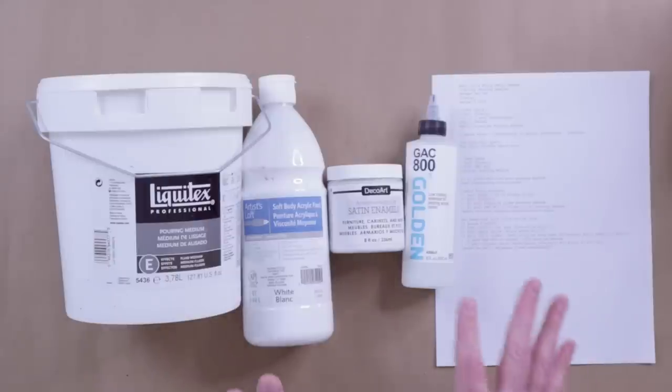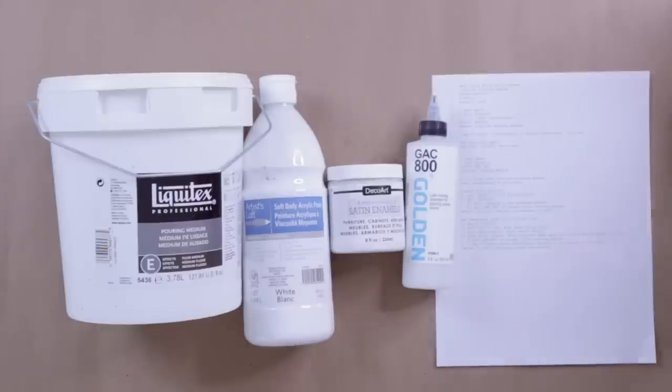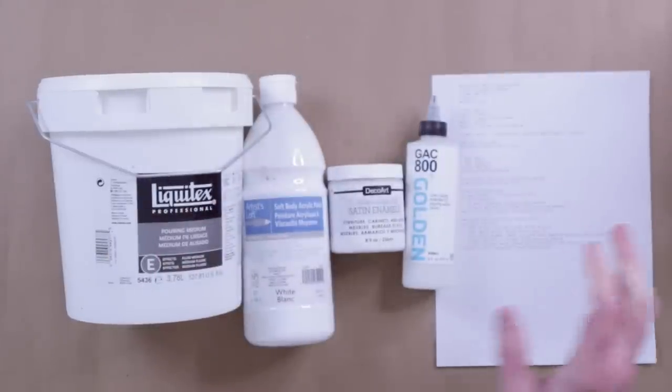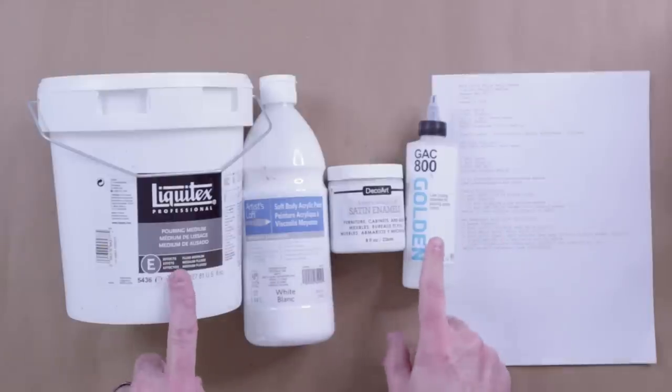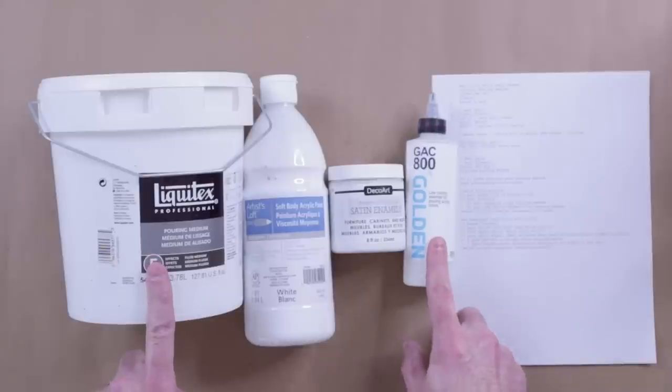So again, we're going to use all of these for the base. And then for the actual colors, we're just going to use paint, Floetrol, water, and probably a little bit of these just to make sure those cells keep their size and they don't go all wonky on us.